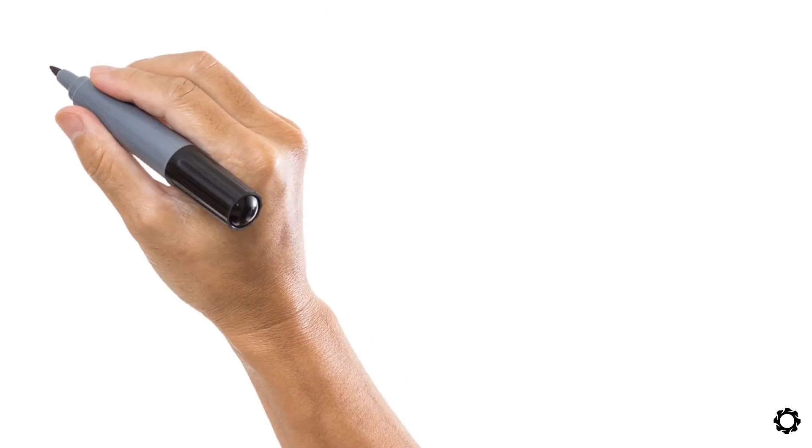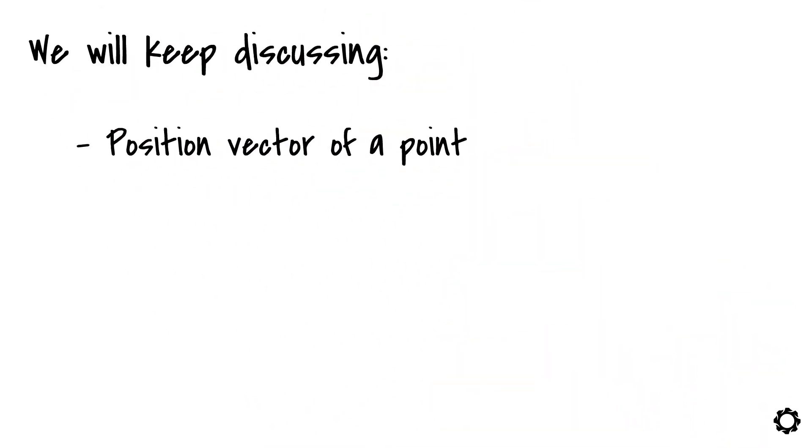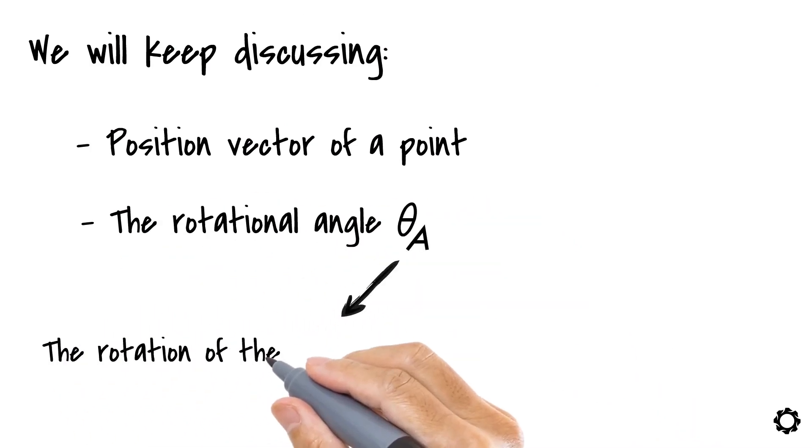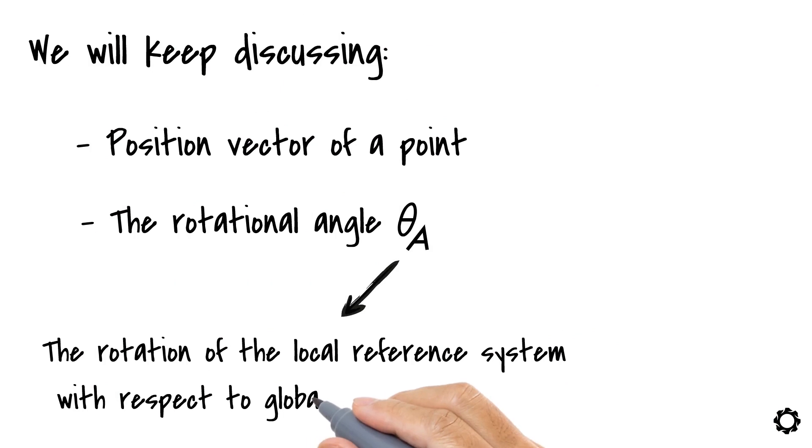In the next video, we will keep discussing the position vector of a point, but now considering the rotation angle theta A which represents the rotation of the local reference system with respect to the global reference system.